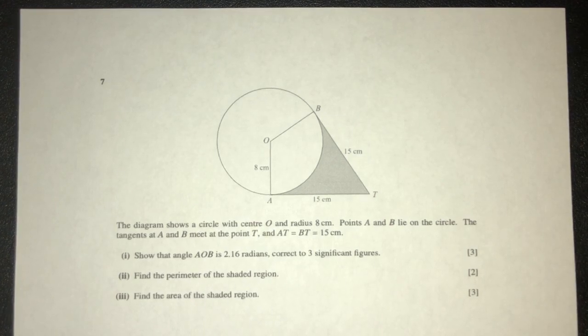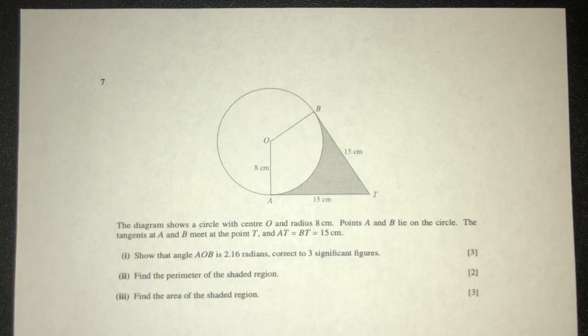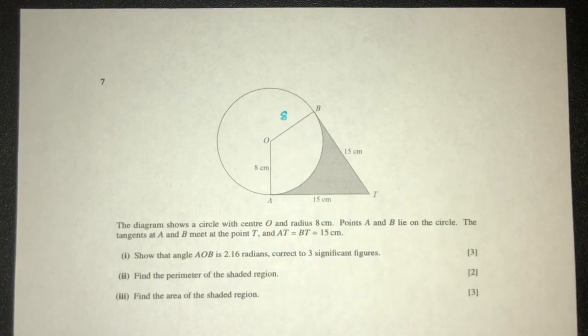Let's move on to the next question. So the diagram shows a circle with center O. This is center O. The radius here is 8, which means this also will be 8, right?